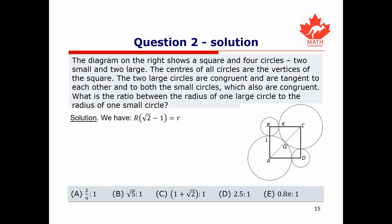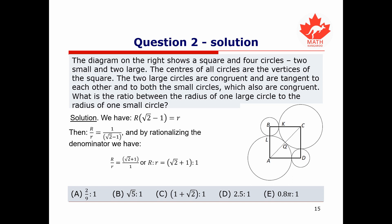We found the equation R times (square root of 2 minus 1) equals lowercase r. To find the ratio R to r, we divide both sides accordingly and rationalize the denominator to get R divided by r equals the square root of 2 plus 1. So the ratio of the large radius to the small radius is (square root of 2 plus 1) to 1, meaning the answer is C.